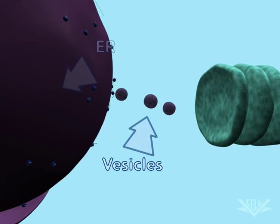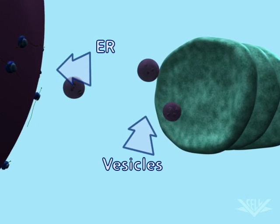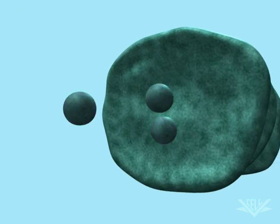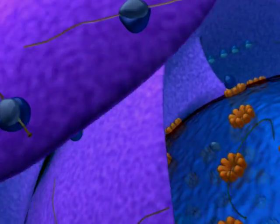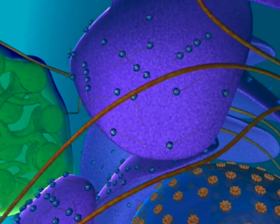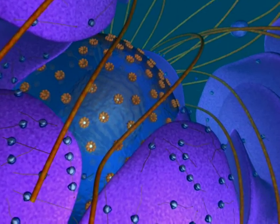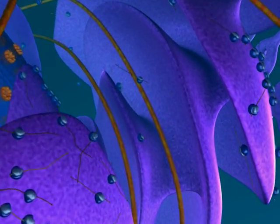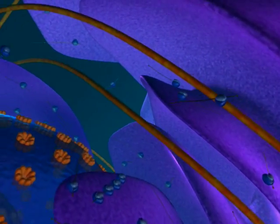Most of this trafficking involves the endoplasmic reticulum, or ER, and the Golgi apparatus. We are now looking at the ER, or endoplasmic reticulum. Some of the cell's ribosomes are attached to the ER, and the proteins they manufacture are inserted directly into the space inside the ER.